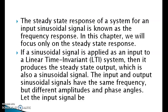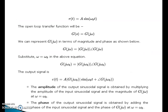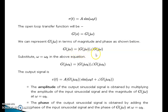If a sinusoidal signal is applied as an input to a linear time-invariant system, then it produces a steady state output which is also a sinusoidal signal. The input and output sinusoidal signals have the same frequency but different amplitudes and phase angles. Let the input signal be r(t) = A sin(ω₀t). The open loop transfer function is G(s) = G(jω). We can represent G(jω) in terms of magnitude and phase as shown below: G(jω) = |G(jω)| ∠G(jω).